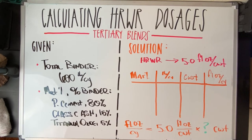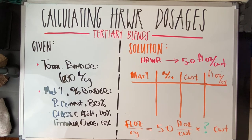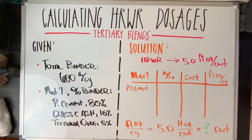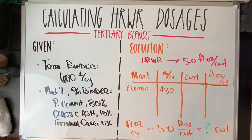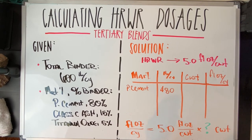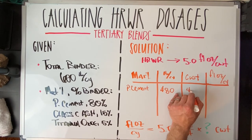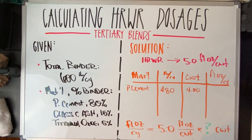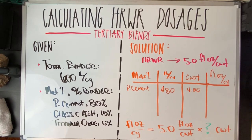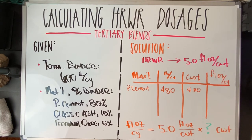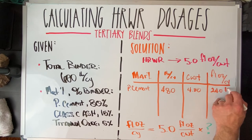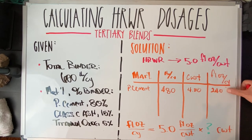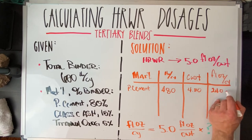So we said 80 percent of a binder package was Portland cement. 80 percent of 600 is 480 pounds per cubic yard. When it comes to cement, hundredweights are easy: we divide 480 by 100 to give us 4.80 cement hundredweights. And if we take 4.80 and multiply it by 5, we get 24 — that is 24 fluid ounces per cubic yard for our Portland cement.